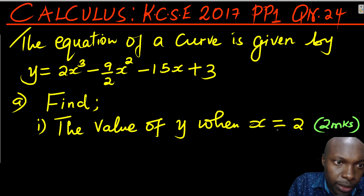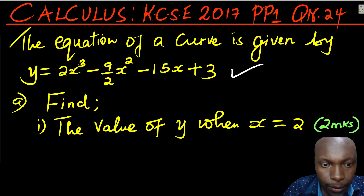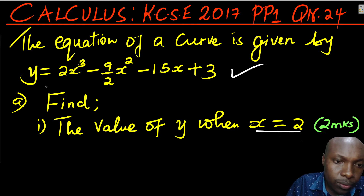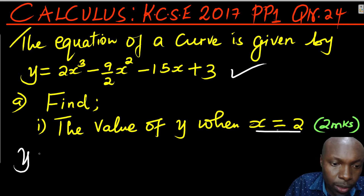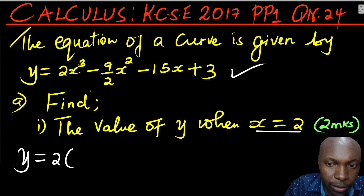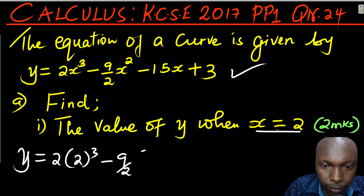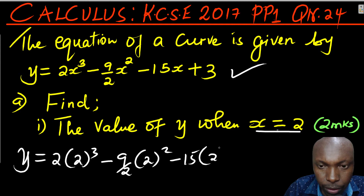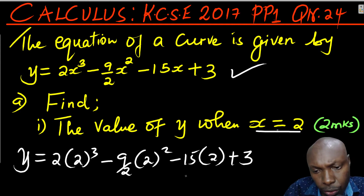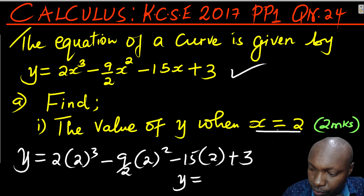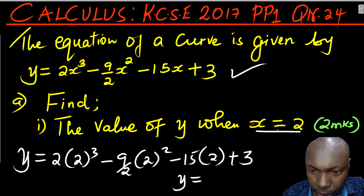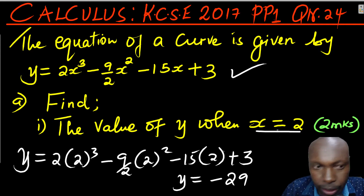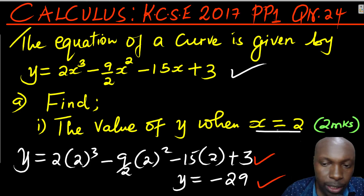Let's go to the first one. We're given the equation of the curve, and the first one is quite easy. We'll find the value of y when x equals 2. We just need to substitute this x value into the function. So y equals 2 times 2 cubed minus 9 over 2 times 2 squared minus 15 times 2 plus 3. Using a calculator, this gives the value of y as negative 29.